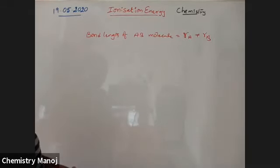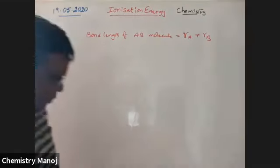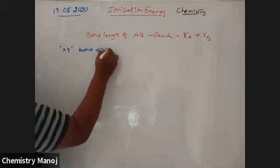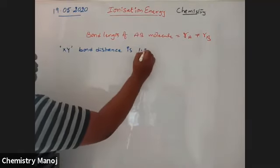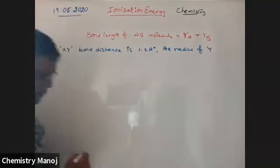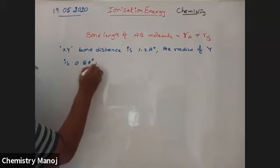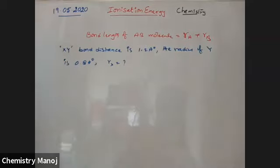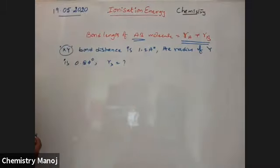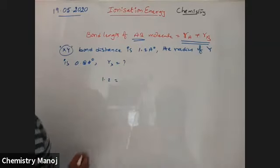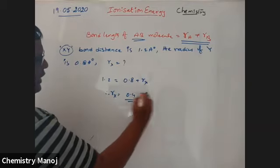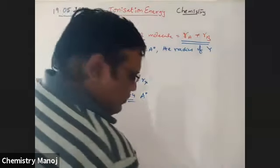Based on this, here's a problem: the XY bond distance is 1.2 Å and the radius of Y is 0.8 Å. The radius of X equals how much? Since bond length = radius of X + radius of Y, 1.2 = 0.8 + radius of X, therefore radius of X = 0.4 Å.